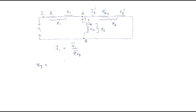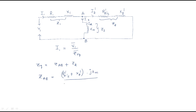Z_equivalent equals Z_AB plus Z1, where Z_AB is the parallel combination of the two branches. Z_AB equals the parallel combination of the rotor impedance (R2 dash by S plus jX2 dash) and the magnetizing reactance jXM, divided by their sum: (R2 dash by S + jX2 dash + jXM).